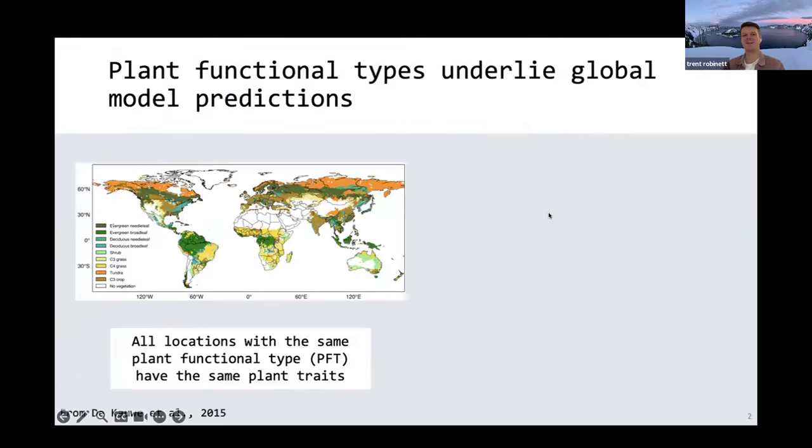I just want to start this talk by saying that in all the parameter optimization chats we've been having so far, when we talk about vegetation parameters, these predictions are largely underlined by the fact that we use the plant functional type parameter to represent vegetation diversity. We take the whole globe and divide it up into about 15 categories, and then we assume that everywhere with the same plant functional type has the same plant traits.